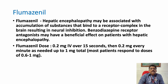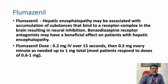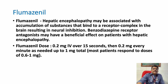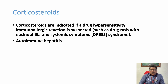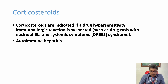Flumazenil, a benzodiazepine receptor antagonist, can be tried in hepatic encephalopathy coma. The dose is 0.2 mg IV over 15 seconds, then 0.2 mg every minute as needed up to 1 mg total. It is not a routine guideline. Corticosteroids are not routinely used in hepatic encephalopathy, but can be tried in drug-induced hypersensitivity leading to hepatic failure or in autoimmune hepatitis with hepatic failure, based on gastroenterologist preference.